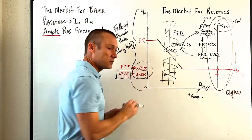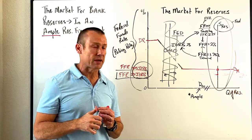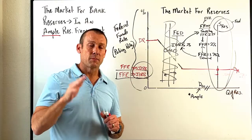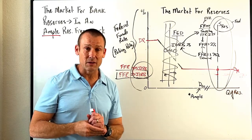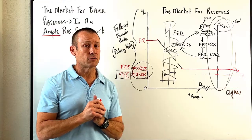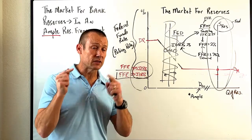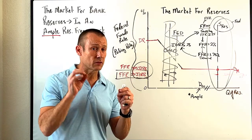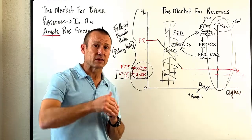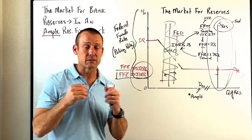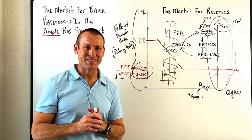No more. Under the ample reserve framework, supply is way to the right, and the Fed now uses its new primary policy tool — the IORB — to change the federal funds rate. That's basically everything you need to know about the ample reserve framework and how the Fed now changes their policy rate to transmit interest rate changes to the rest of the economy — monetary policy.